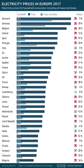The following table shows electricity prices both for household and non-household consumers within the European Union and Iceland, Liechtenstein, Norway, Albania, Republic of Macedonia, Montenegro, Serbia, Turkey, Bosnia and Herzegovina, Kosovo, Moldova, and Ukraine.